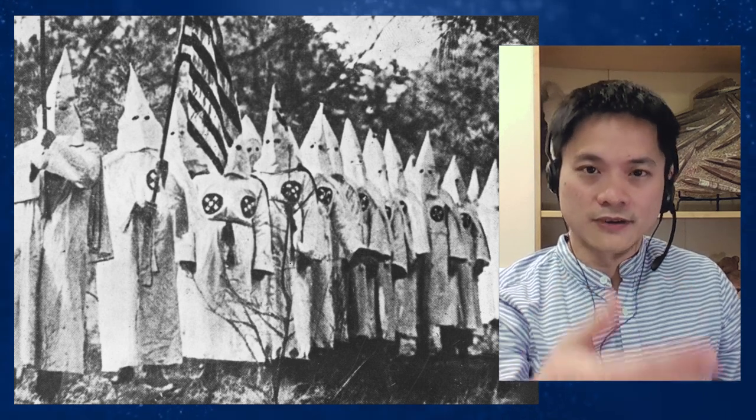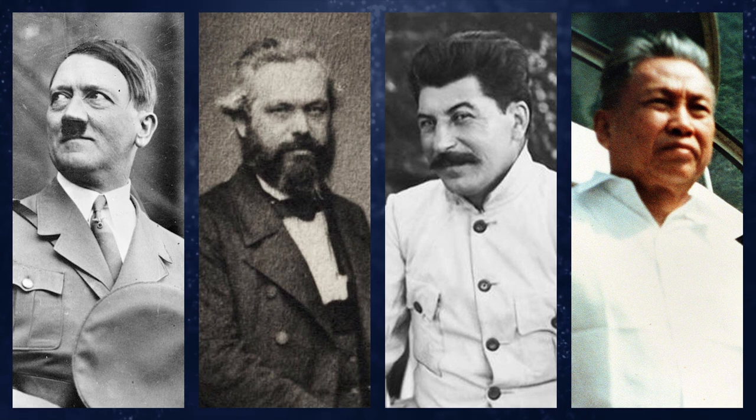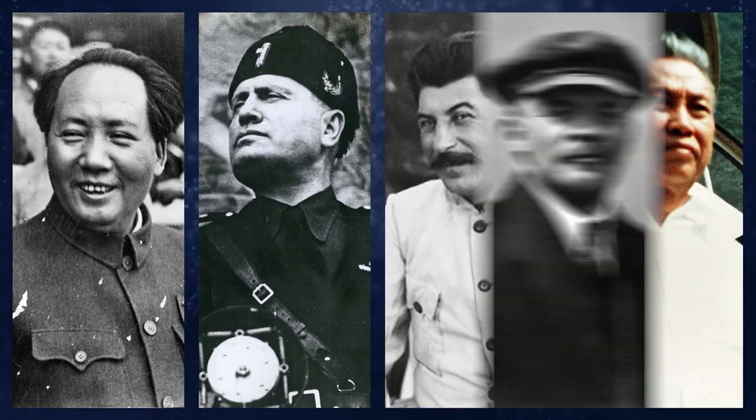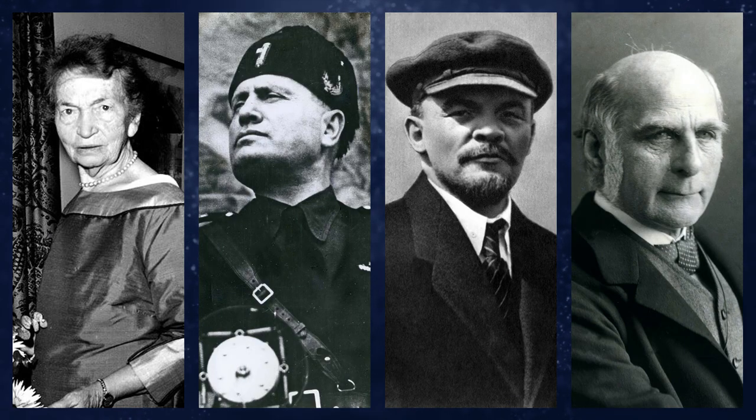The Ku Klux Klan, for example, was heavy on evolution because of this whole idea of superior races. If you look at some of the most notorious dictators in the last century — Adolf Hitler, Karl Marx, Stalin, Pol Pot, Mao Zedong, Mussolini, Lenin, Francis Galton the founder of eugenics, and Margaret Sanger the founder of Planned Parenthood — they all share one thing in common: Darwin was one of their favorite authors. The whole basis there was applying natural selection to their own people groups. Hitler believed some races were inferior.